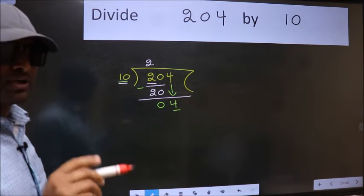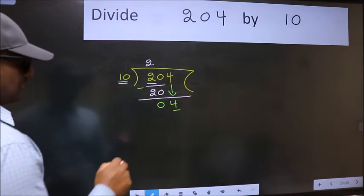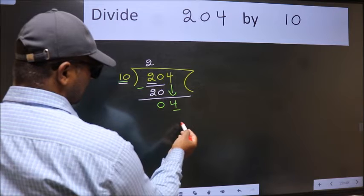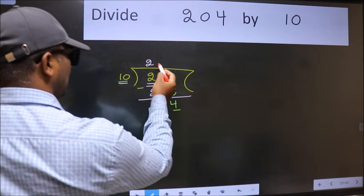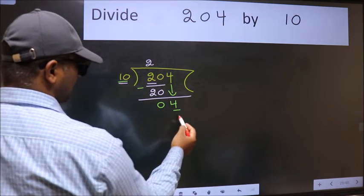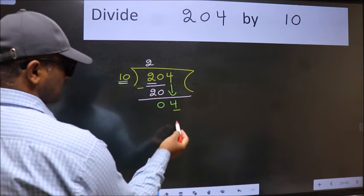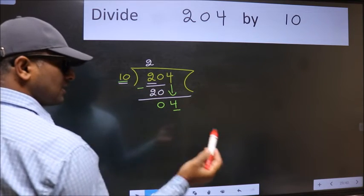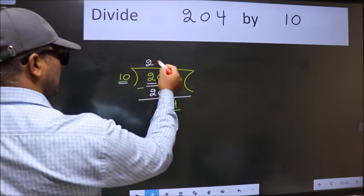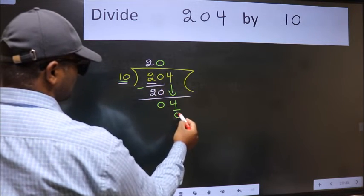Instead of that, what we should think of doing is, which number should we take here? If I take 1, we will get 10. But 10 is larger than 4. So what we do is, we take 0. So 10 into 0, 0.